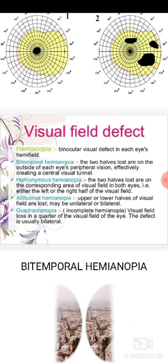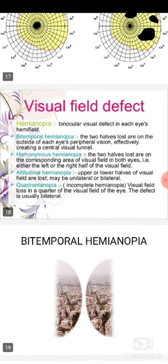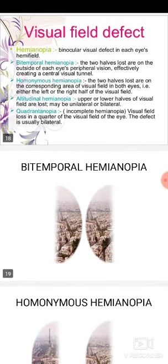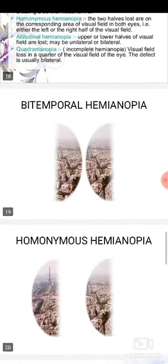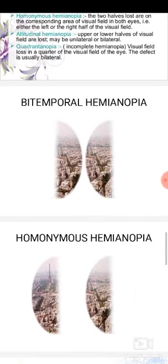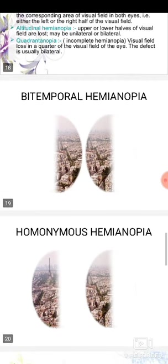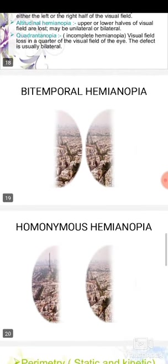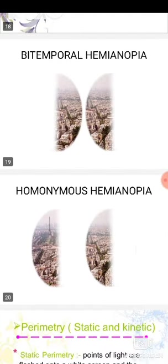Then quadrantanopia, which is an incomplete hemianopia with visual field loss in a quarter of the visual field of the eye; the defect is usually bilateral. Images show bilateral hemianopia where the two halves lost are on the outside of each eye's peripheral vision creating a central visual tunnel, and homonymous hemianopia where the two halves lost are on the corresponding area of the visual field in both eyes.